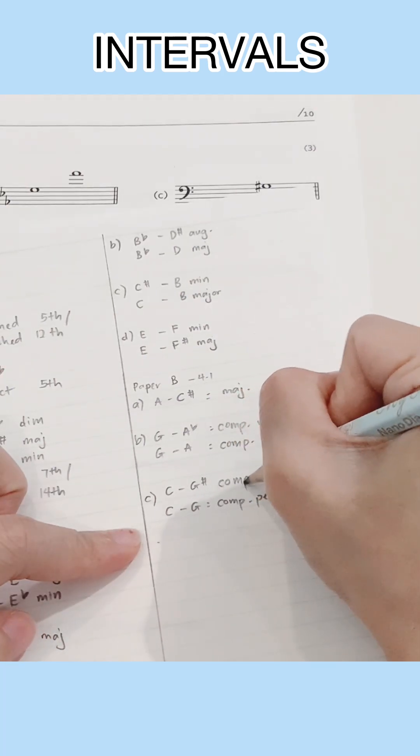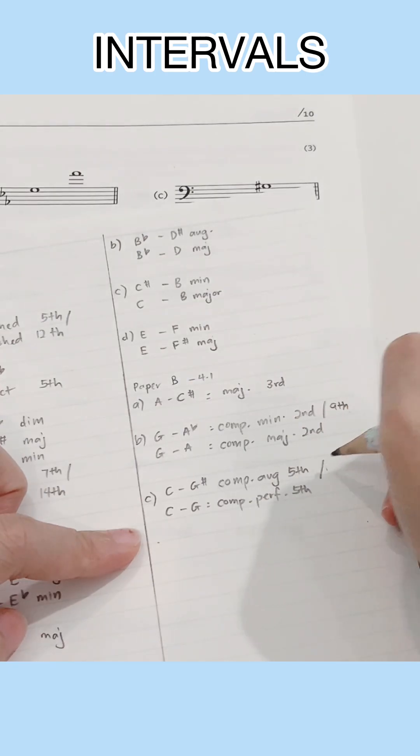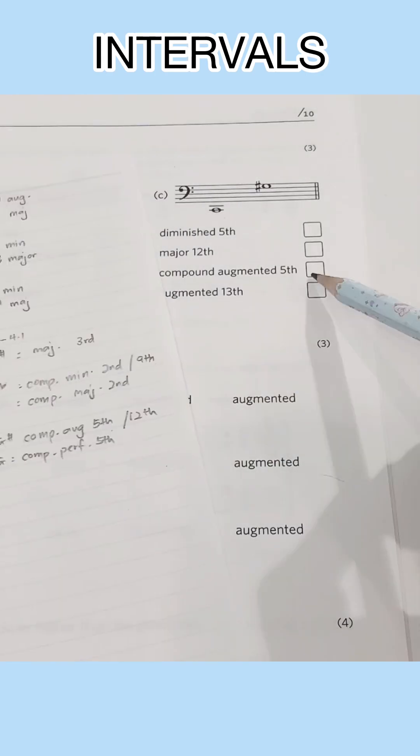When you raise G to G sharp, then it will be a compound augmented fifth or if you add seven to this, it will be an augmented 12th. So this is the answer.